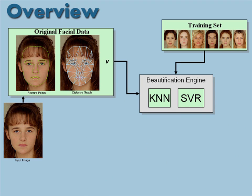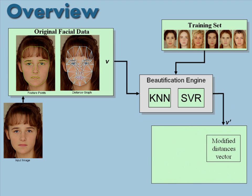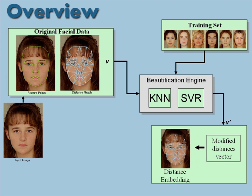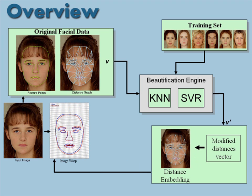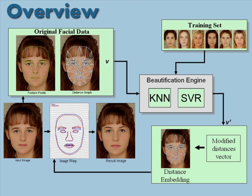To beautify the input image, we use our beauty estimating machine to find a new feature distance vector V' with a higher beauty estimate. Once we find V', the corresponding facial distances are embedded in the plane and serve as a target to define a 2D warp field that maps the original facial features to their updated locations, producing our final result.